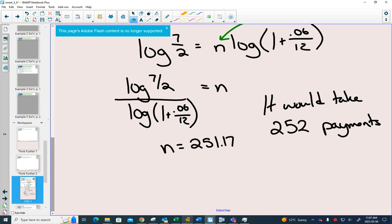251 wouldn't be enough. If you need that $100,000, you would not have $100,000 at 251. You would have to wait until your next one at 252. Then you would be over $100,000. This is roughly, you divide that by 12, about 21 years.